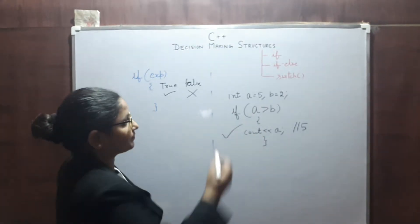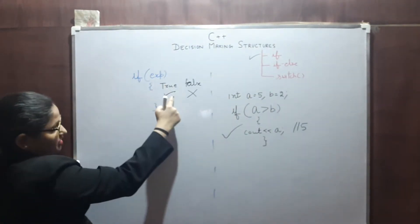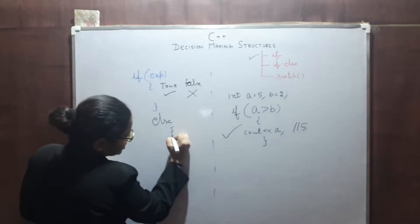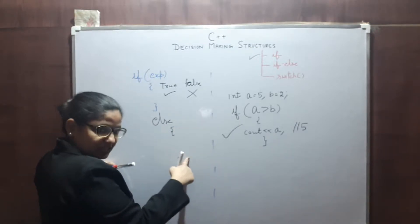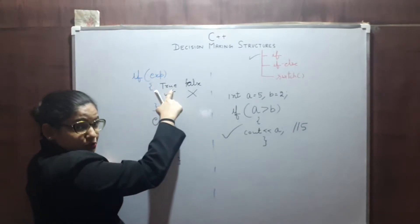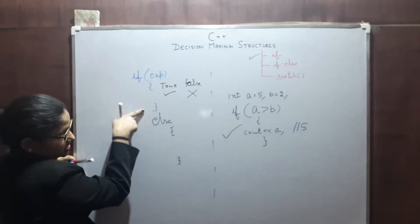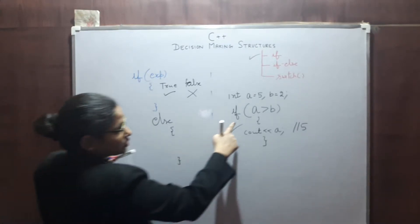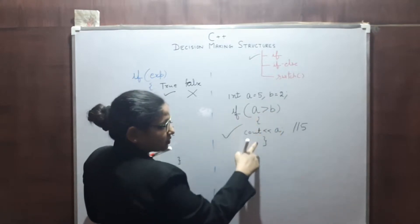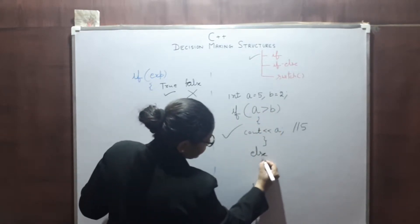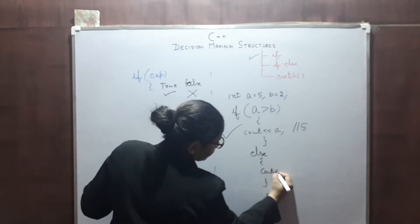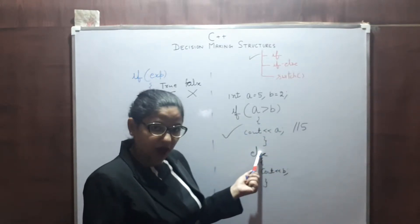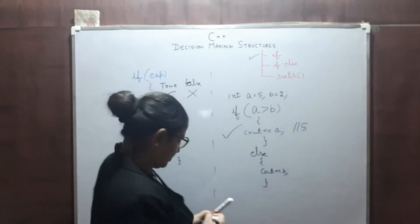Let's see if-else. If the expression is true, then execute this block of instruction; else execute this other block of instruction. So if A is greater than B, then execute the if block, else cout B — execute the else block.